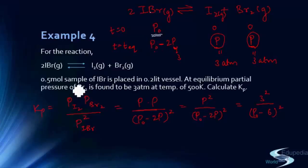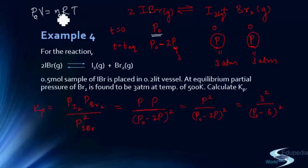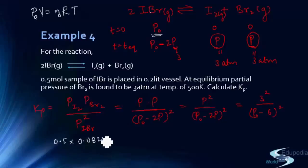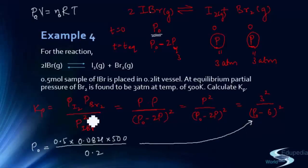P0 is the initial partial pressure of IBr at t=0. Using PV = nRT: P0 × 0.2 L = 0.5 mol × 0.0821 L·atm/(K·mol) × 500 K. Solving this gives P0. Substituting P0 back into the Kp expression gives the final numerical answer for Kp.